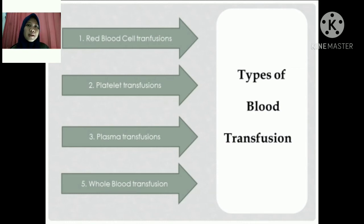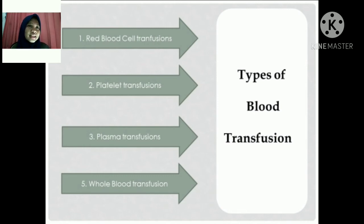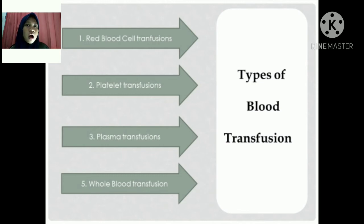Two: platelet transfusion. A platelet transfusion can help those who have lower platelet counts, such as from chemotherapy or a platelet disorder. Three: plasma transfusion. Plasma contains proteins important for health. A person may receive a plasma transfusion if they have experienced severe burns, infections, or liver failure.